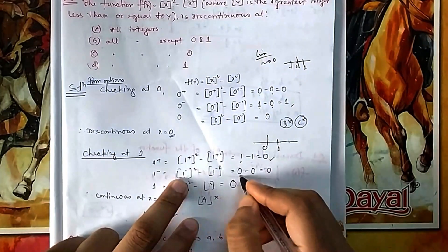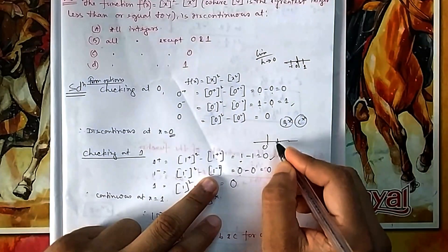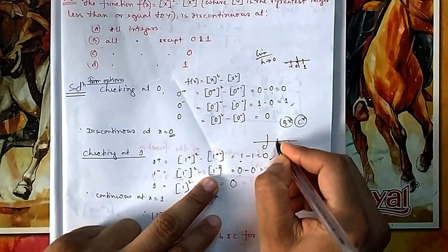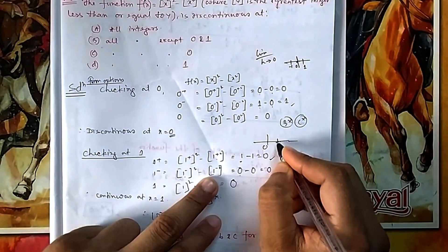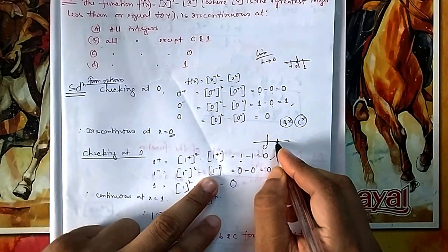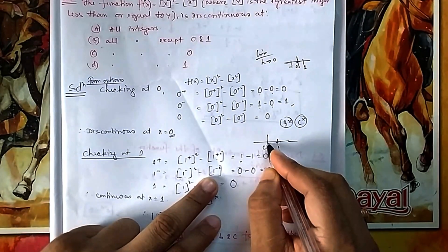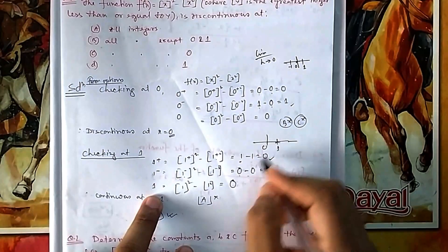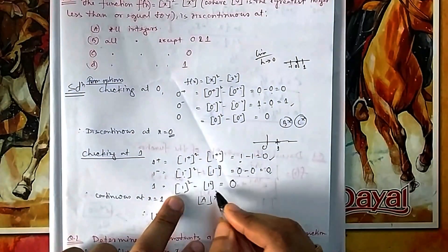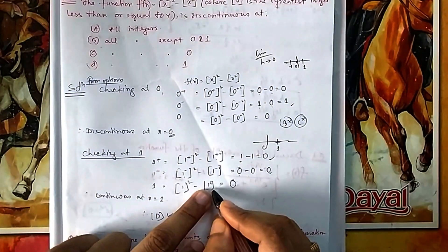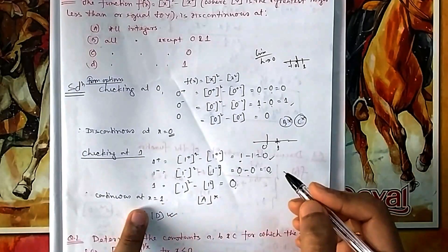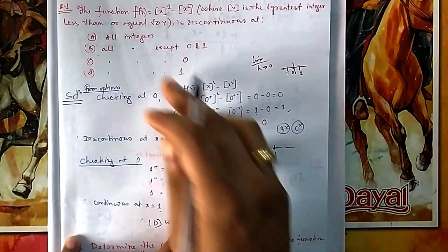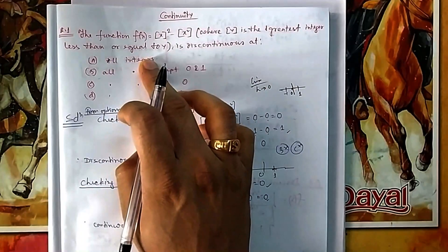For LHL at x = 1: (0.99999)² is still less than 1, so [x²] = 0 as well. At x = 1 exactly, [1]² − [1²] = 1 − 1 = 0. So LHL = RHL = f(1) = 0, meaning the function is continuous at x = 1.